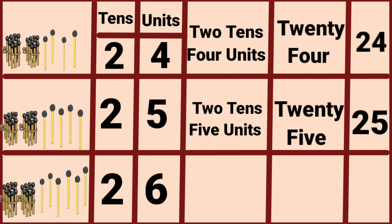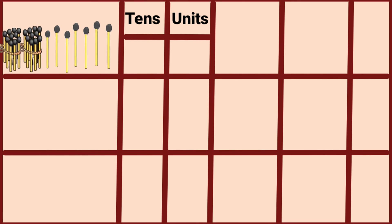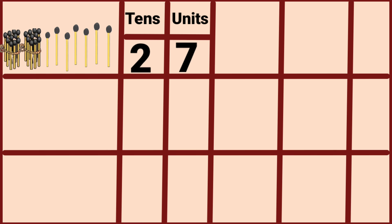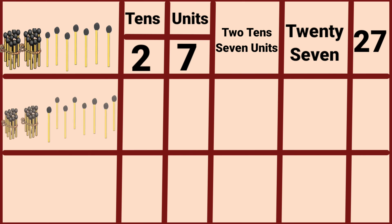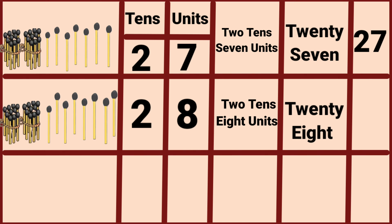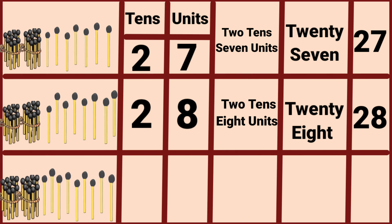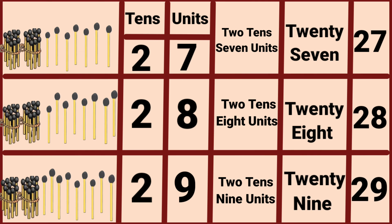Two tens, six units — twenty-six. Two tens, seven units — twenty-seven. Two tens, eight units — twenty-eight. Two tens, nine units — twenty-nine.